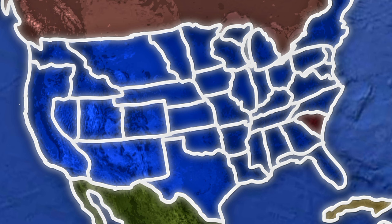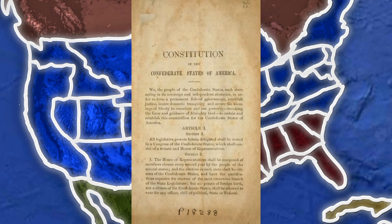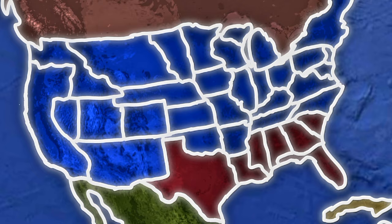On December 20, 1860, shortly after Abraham Lincoln's victory in the presidential election, South Carolina adopted an ordinance declaring its secession from the United States. By February 1861, six more southern states had adopted similar ordinances. On February 7, the seven states adopted a provisional constitution for the Confederate States of America and established their temporary capital at Montgomery, Alabama. A February peace conference in Washington failed to resolve the crisis.